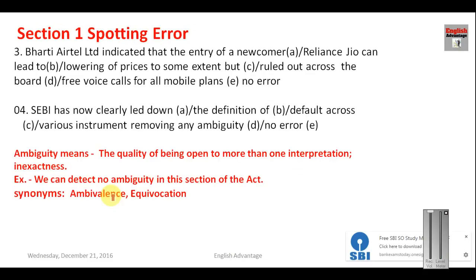Question number three: 'Bharti Airtel Limited indicated that the entry of a newcomer, Reliance Jio, can lead to lowering of prices to some extent but ruled out across-the-board free voice calls for all mobile.' Since the sentence is in the past tense — indicated by the word 'indicated' — you have to change 'can' into 'could'. That is the mistake here and your answer will be B.